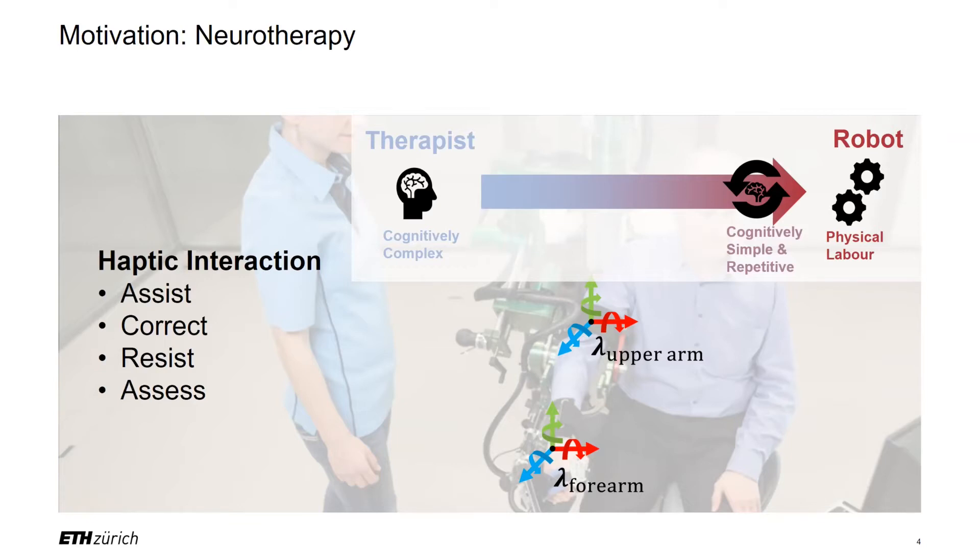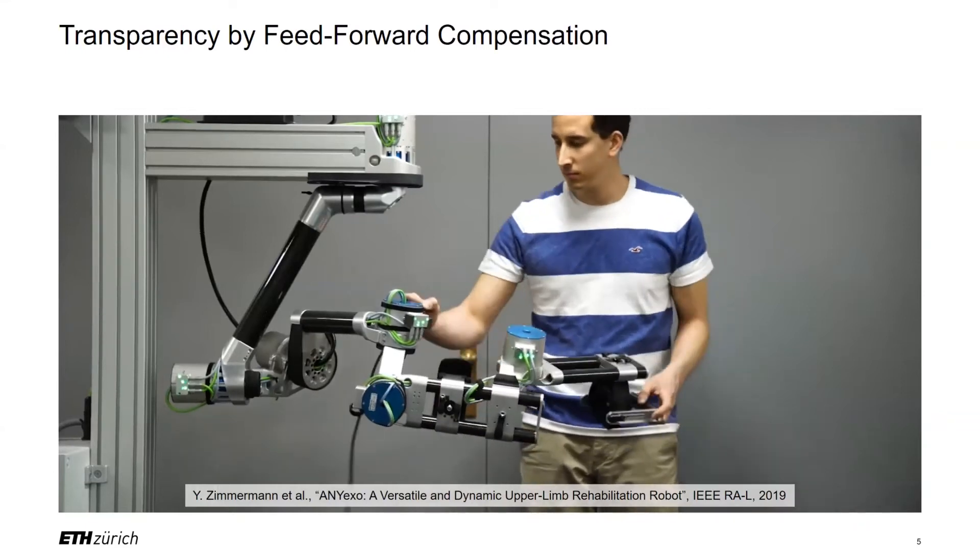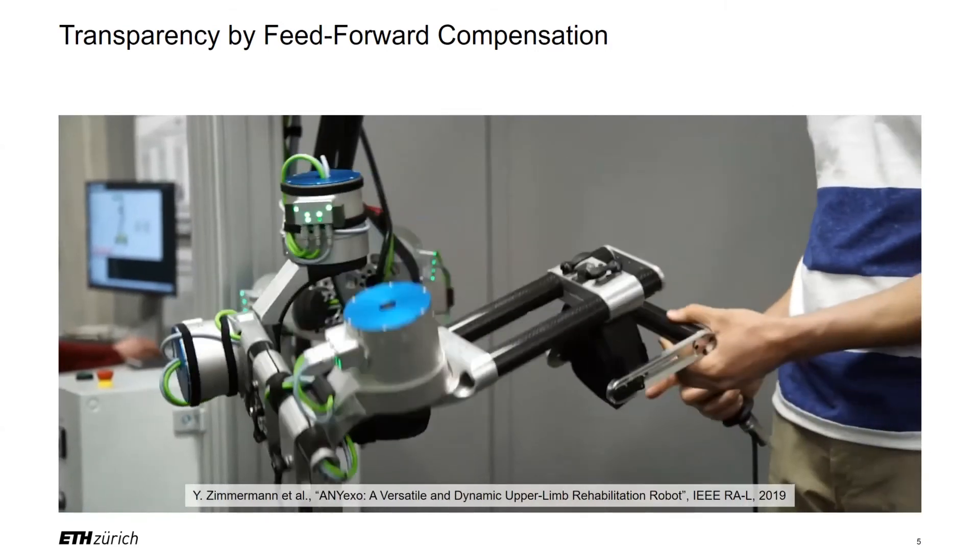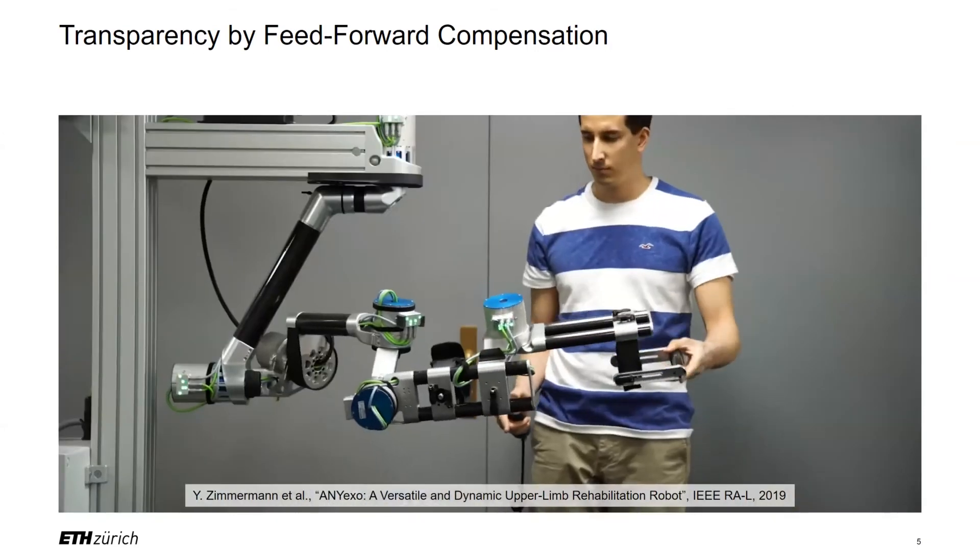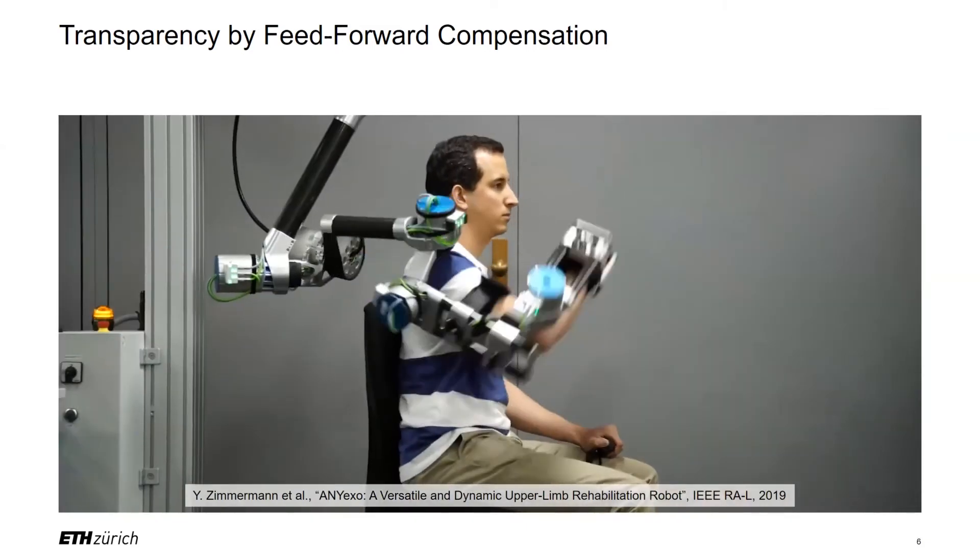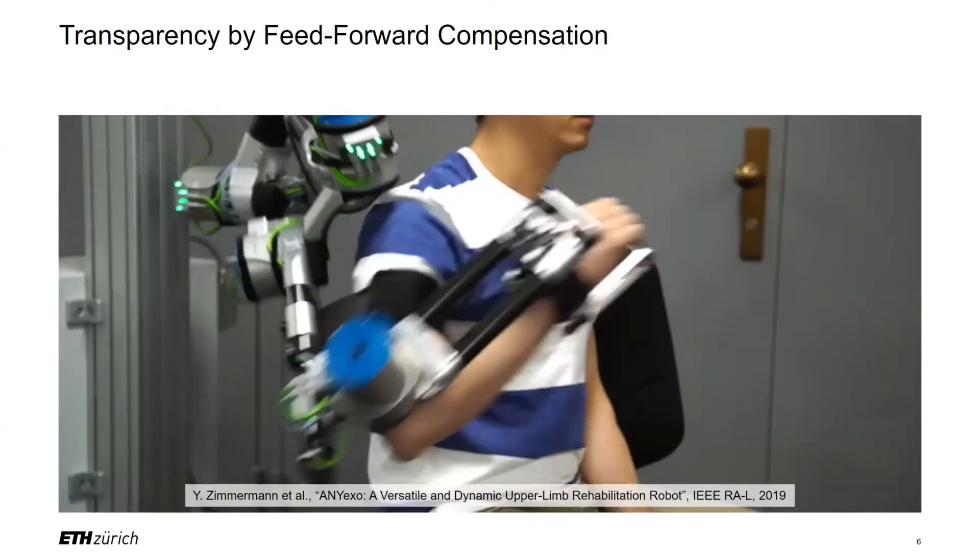With rehabilitation robots, we want to achieve a similar or even better performance. Let us have a look at what was achieved so far. To demonstrate the performance of the hardware, we were using a simple feed-forward controller to compensate the robot's gravity, Coriolis and centrifugal terms. As you can see, the exoskeleton is controlled such that I am able to move quite freely. We could demonstrate that the gravity load of the robot can be compensated accurately.